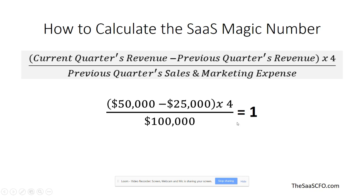So how do you calculate the SAS magic number? It is simply the current quarter's revenue minus the previous quarter's revenue, times four to annualize it, and then dividing by the previous quarter's sales and marketing expense. For example, if in the second quarter we had recognized revenue of $50,000 and in the first quarter it was $25,000, we subtract those two and annualize by four to get $100,000, and divide by $100,000 of sales and marketing expense — which gives you a SAS magic number of one.